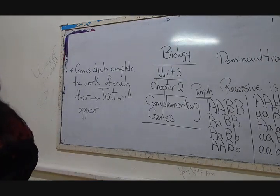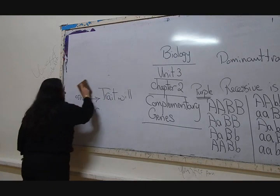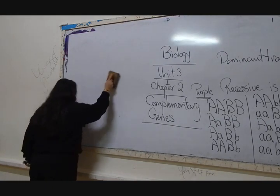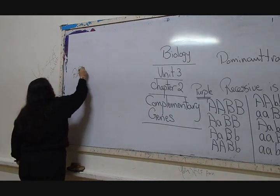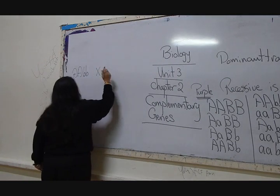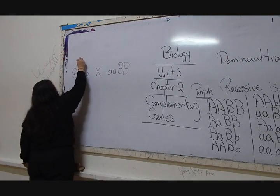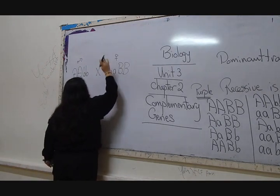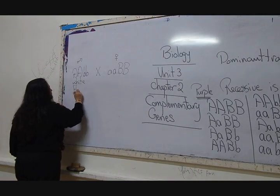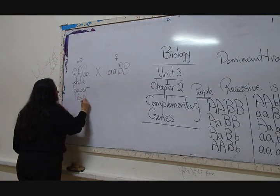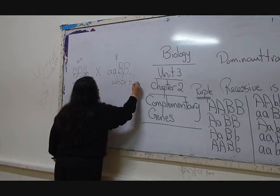Let us see together and understand why both gene groups must work together to make the dominant trait appear. We will take a plant with genotype AAbb — white flower, sweet pea — crossed with a plant with genotype aaBB — also white flower, sweet pea. One is male and one is female, but we can change as we want. Both of them show the recessive white flower trait.